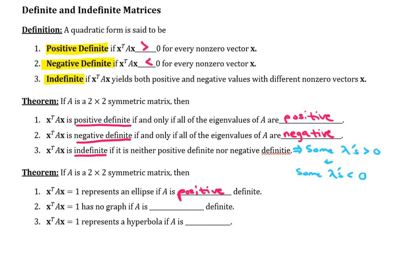If we set the quadratic form equal to one, it's going to have no graph if the symmetric matrix A is negative definite. In other words, you get what's called a degenerate conic section if X transpose AX is negative definite. So all of the eigenvalues are negative.